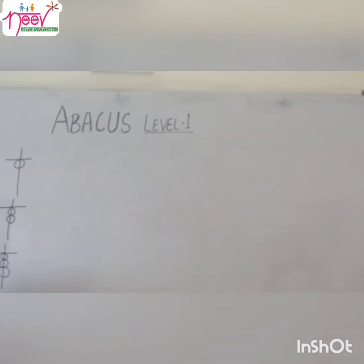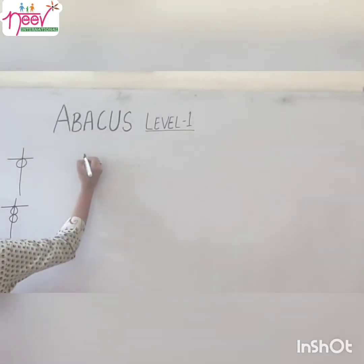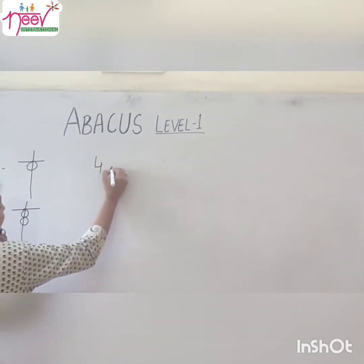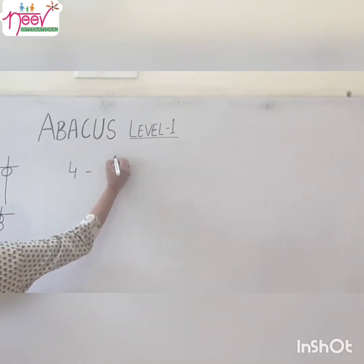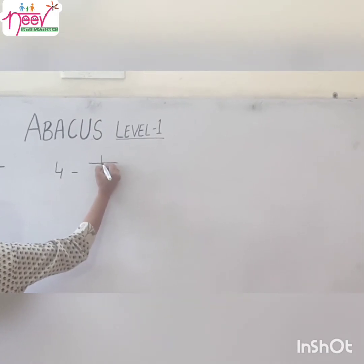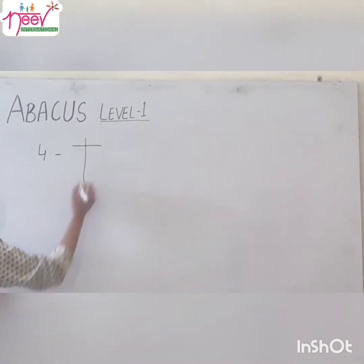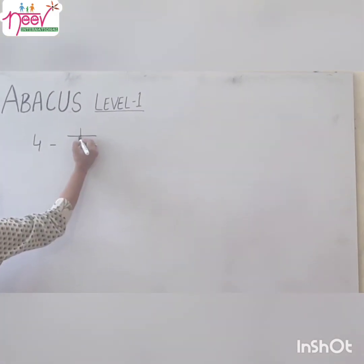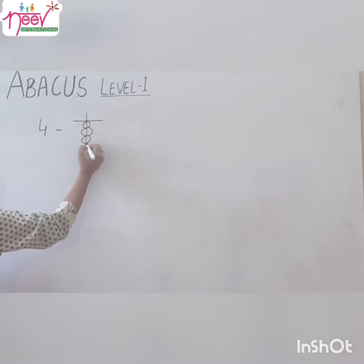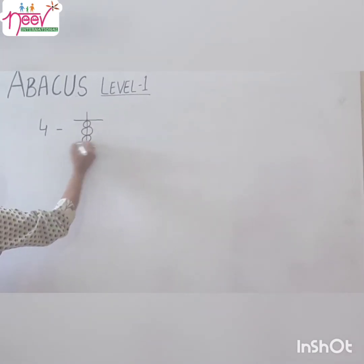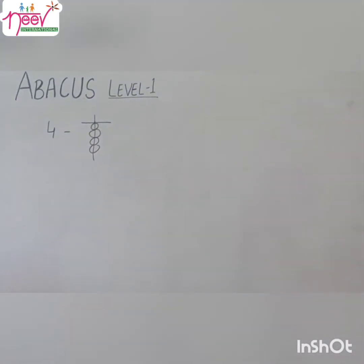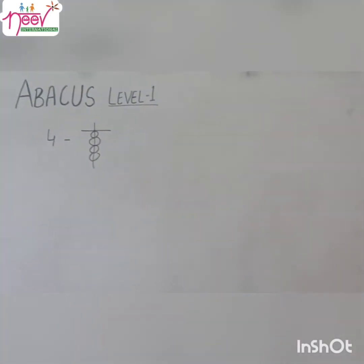Now let's see how to make 4. Make 1's rod, represent it with a dot, and we will make 4 beads like this. We have made 4 beads. This is our 4.